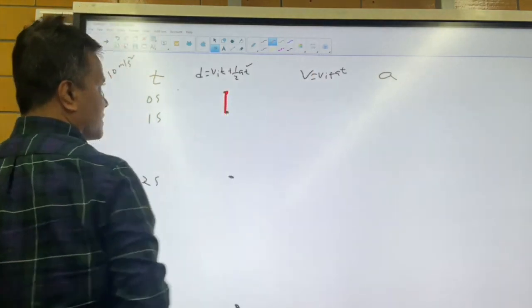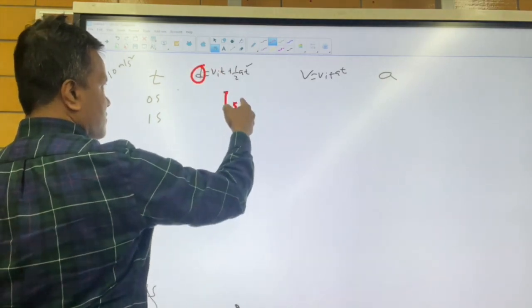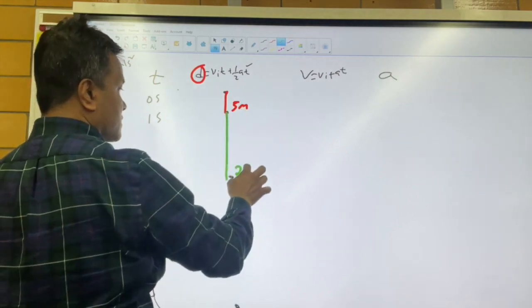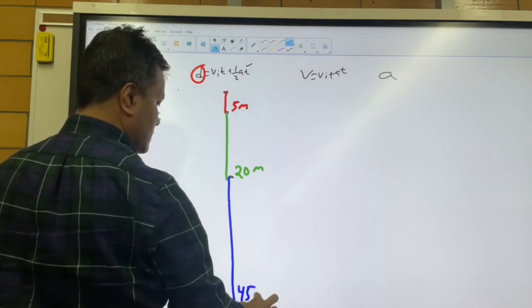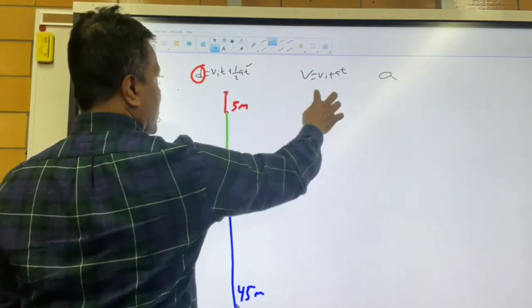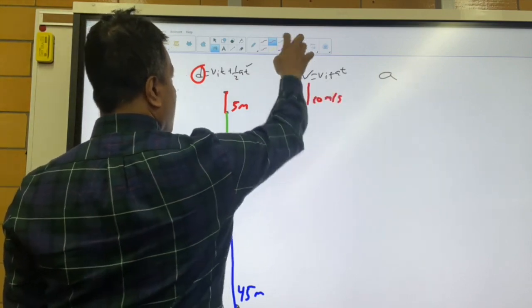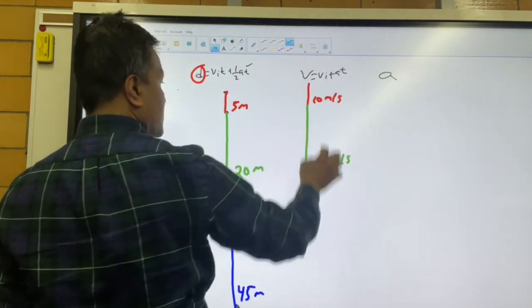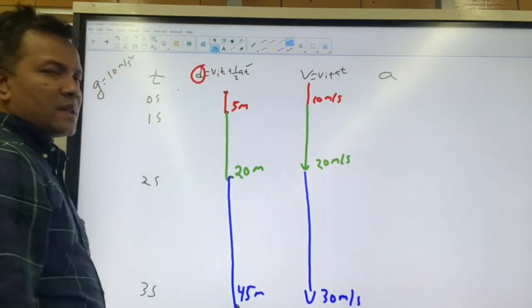The distance traveled: at end of 1 second it's 5 meters, at end of 2 seconds it's 20 meters, and at end of 3 seconds it's 45 meters. The velocity: at end of 1 second it's 10 m/s, at end of 2 seconds it's 20 m/s, and at end of 3 seconds it's 30 m/s.